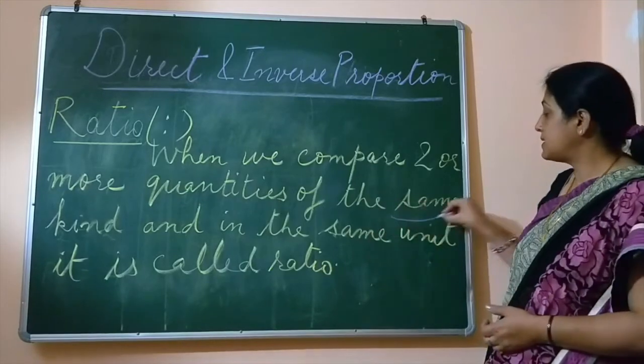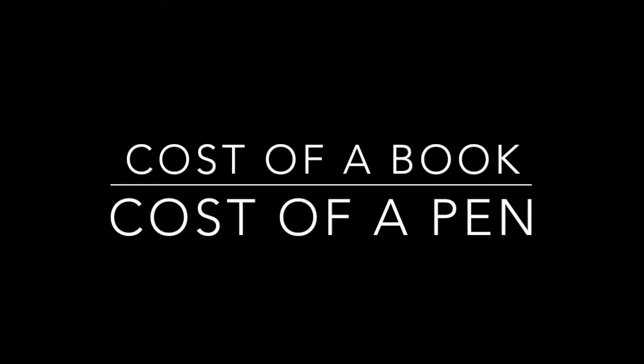Now what do we mean by same kind? If we take ratio of cost of a book and cost of a pen we are not comparing the book and the pen. We are comparing cost in rupees of both.